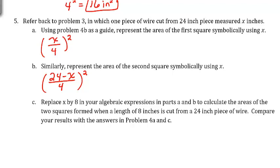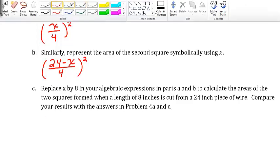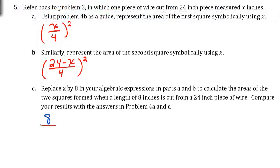Now replace X with 8 in the algebraic expressions to calculate the areas of the two squares when a length of 8 inches is cut from a 24-inch piece of wire, and compare with the answers in problem 4. Replacing X with 8 in the first expression: (8/4)² = 2² = 4 inches squared. This is the same as the answer we got in part 4A.